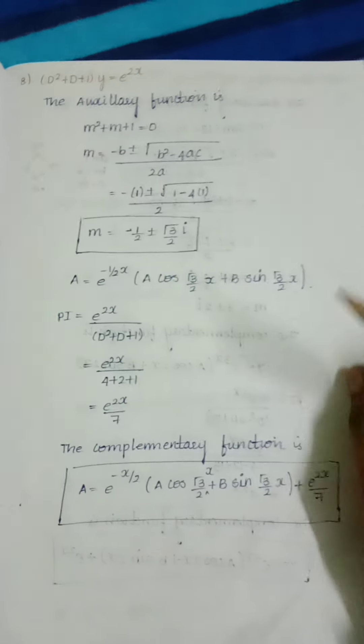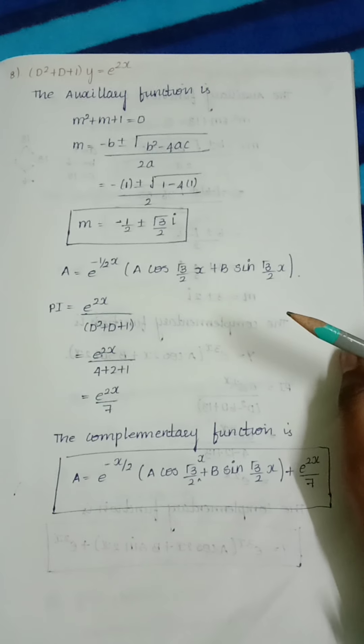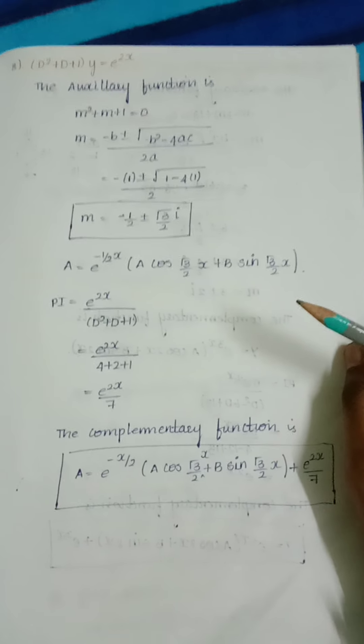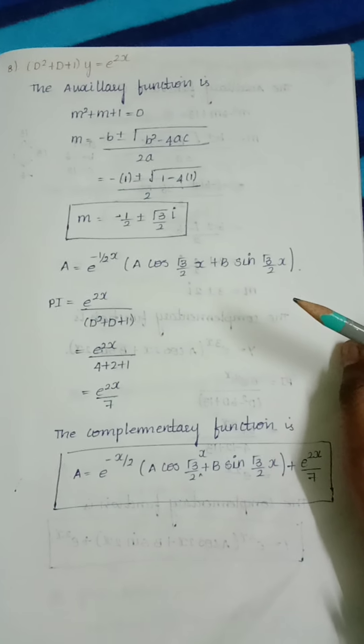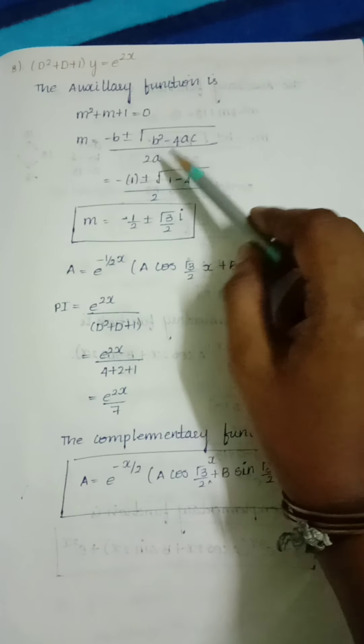We cannot factorize using the normal method or tree factorization, so we use another method for finding the factors: m equals negative b plus or minus root of b² minus 4ac divided by 2a.